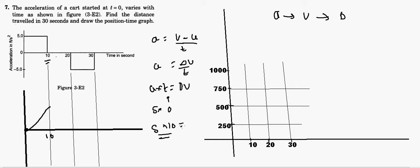Then after t = 10s, the acceleration is 0. If acceleration is 0, the velocity is constant — because v minus u gives 0, meaning no change in velocity. So it's a constant flat graph here. And for the last segment there is a deceleration for the same duration, so it draws the same way in reverse.